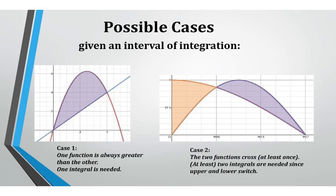So a couple possible cases. Case one would be that one function is always greater than the other. So this image here on the left, we can see that the two functions intersect at an x value of 0 and an x value of 4. And the finite bounded region that's shown in purple here can be found with one integral because this downward facing parabola is always greater than the linear function for the region we're interested in. So we would be doing the downward facing parabola minus the linear equation. And the limits of integration here would again be from the x value of 0 to the x value of 4.